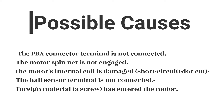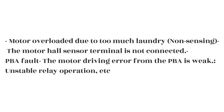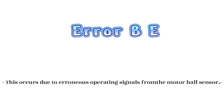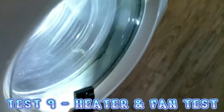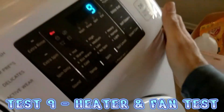Motor driving error and hall sensor error: E3 and B3E. Possible causes — PBA connector terminal not connected, motor spin net not engaged, motor's internal coil damaged (short circuit or cut), hall sensor terminal not connected, foreign material or screw entered the motor. Error 3E: motor overloaded due to too much laundry. Error BE: erroneous operating signals from motor hall sensor, IPM terminal of main PBA not connected, DD motor cover out of place, PCB housing terminal not connected, PBA fault, DD motor fault.